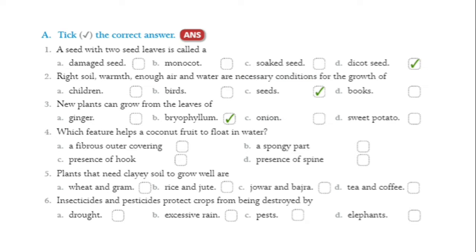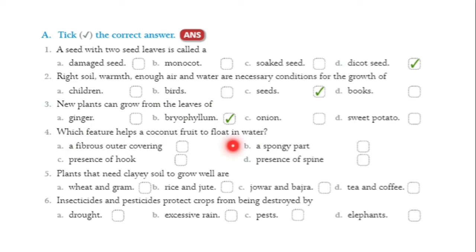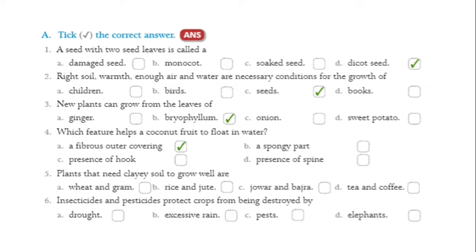Third question: new plants can grow from the leaves of — ginger, bryophyllum, onion, or sweet potato? The correct answer is bryophyllum. Which feature helps a coconut fruit to float in water? The options are fibrous outer covering, spongy part, presence of folk, or presence of spine. The correct answer is fibrous outer covering.